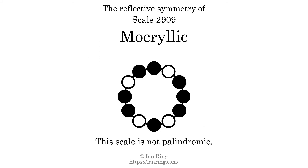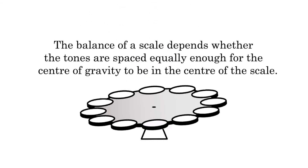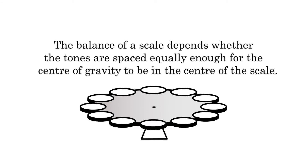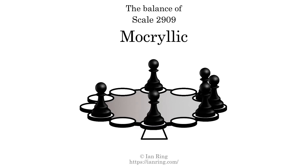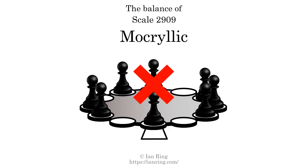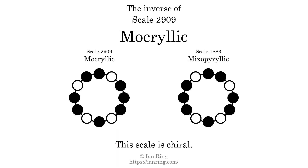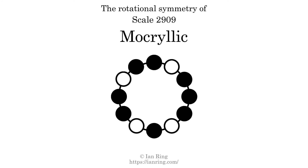This scale has no reflective symmetry. This scale has a different pattern of intervals ascending and descending, so it is not palindromic. This scale has no ridge tones. The balance of a scale depends on whether the tones are spaced equally enough for the center of gravity to be the center of the scale. This scale is not balanced. The inverse of this scale is scale 1883, also known as Mixoperillic. This scale is chiral — it cannot transform into its inverse by rotational transformation. This scale has no rotational symmetry.